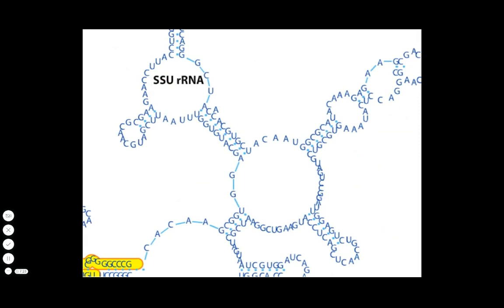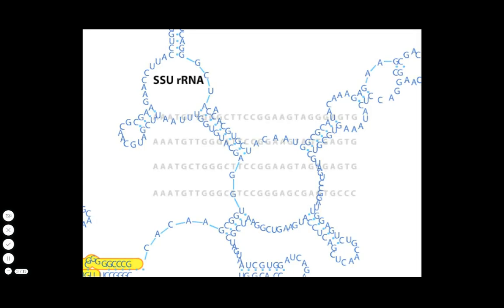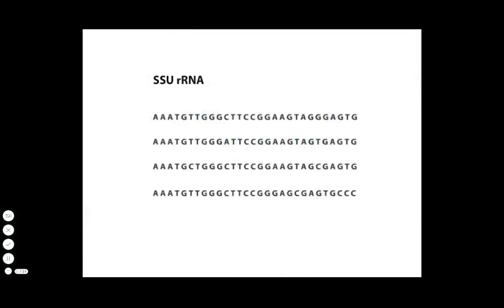PCR can be used to amplify genes even from a mixture of uncultured organisms. For example, sequences from a gene encoding the small subunit ribosomal RNA can be used to determine the relatedness of bacteria and to map a phylogenetic tree.